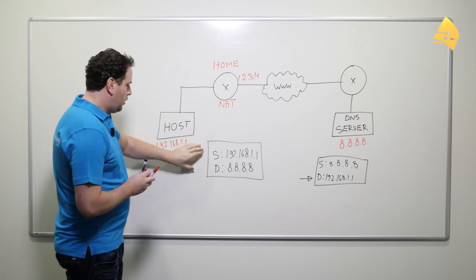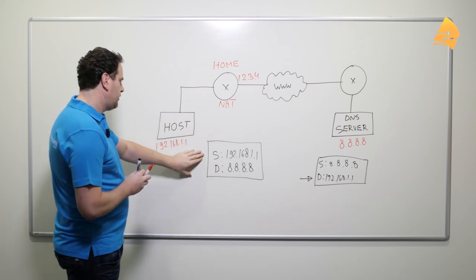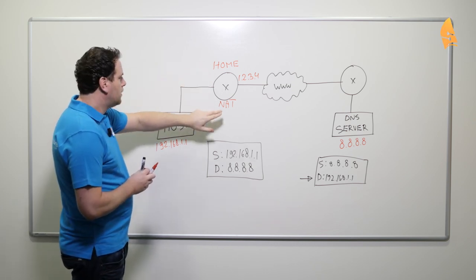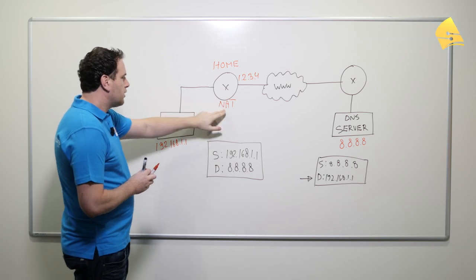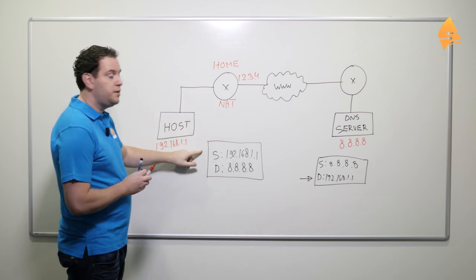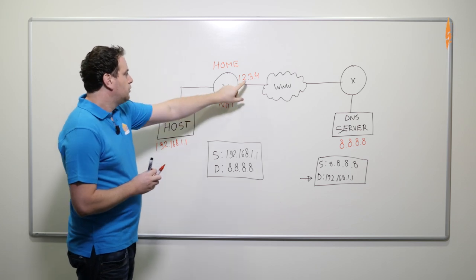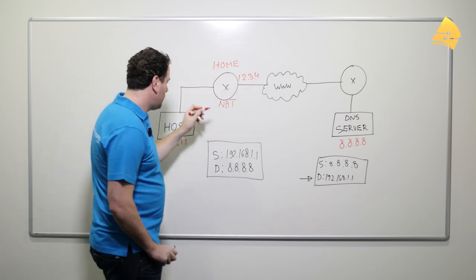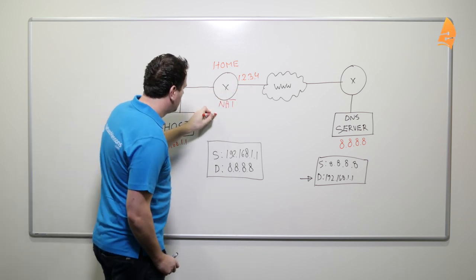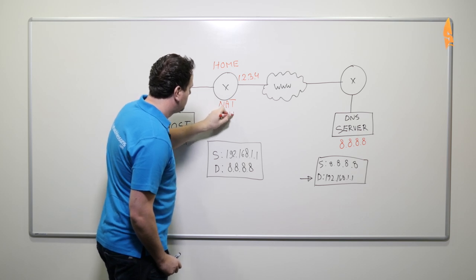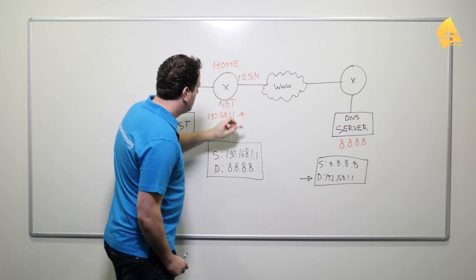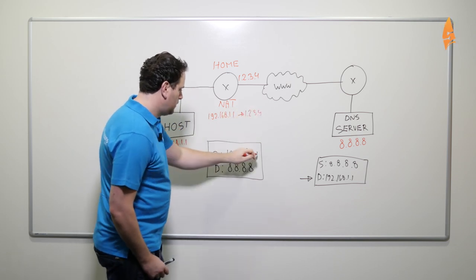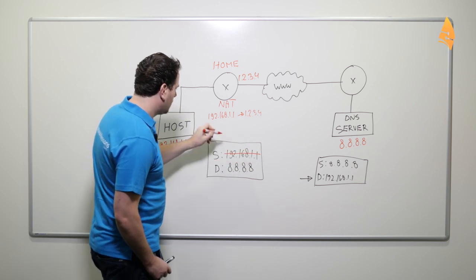Once we enable network address translation, our host will still create this same IP packet. It will be forwarded to the router over here. And what this router will do is translate the source IP address to the public IP address that I received from my ISP.